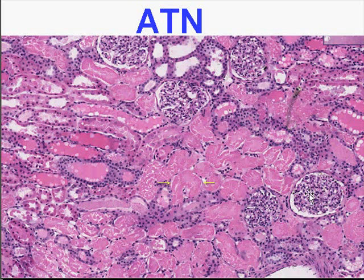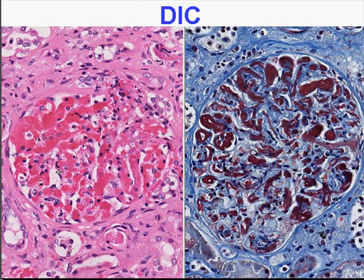Acute tubular necrosis: the glomeruli look pretty viable, but the tubules don't have nuclei and lack cellular definition — some do, but here's a large zone that doesn't. This is classical acute tubular necrosis. For DIC, you can see fibrin thrombi in the glomeruli. With a fibrin stain, the red material becomes fairly specific for fibrin. You're getting small fibrin clots and accumulation of consumable factors like factor VIII and platelets, so serum levels of these would be very low.